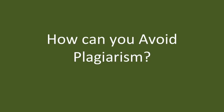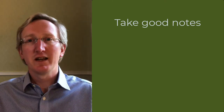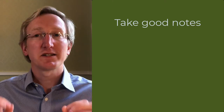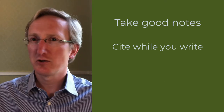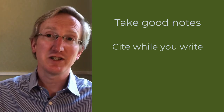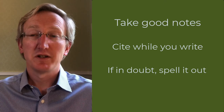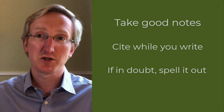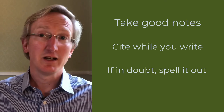So how can you avoid plagiarism? There are three tips to bear in mind. Number one: take good notes. Make sure when you're reading around your subject that you record in your notes where you read each piece of information. Number two: cite while you write. As you're writing your essay, whenever you use information, interpretation, or knowledge from somewhere else, put in the citation as you go along — don't leave it until the end. And the third thing: if in doubt, spell it out. If you're not sure whether something needs to be referenced but you know where you got it from, put in the citation. That way you cover your bases and can't be accused of plagiarism.